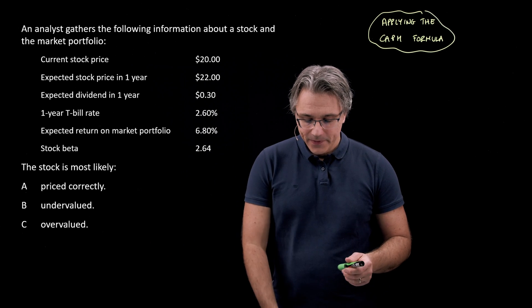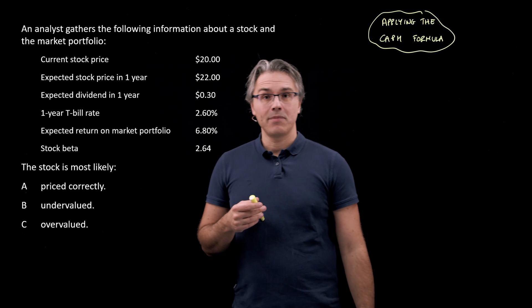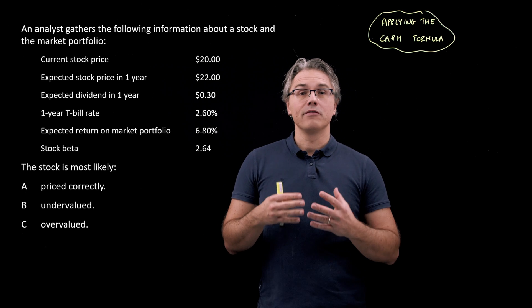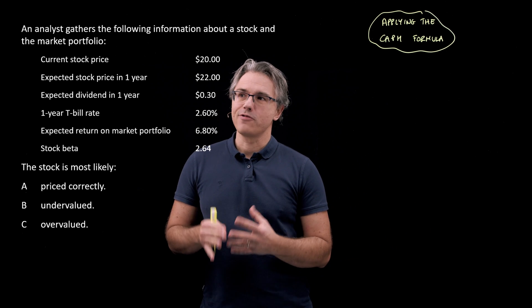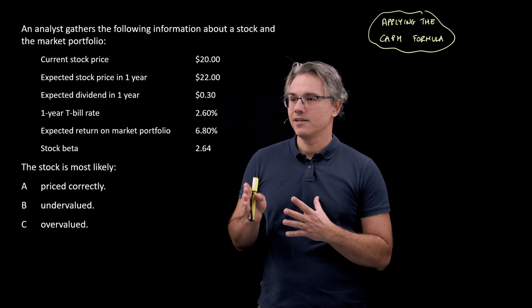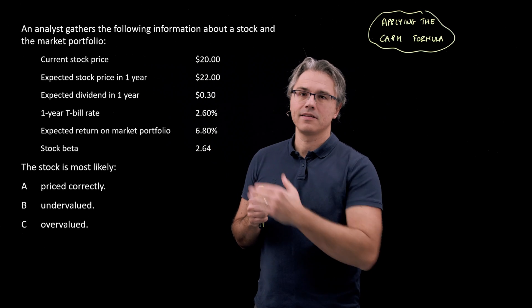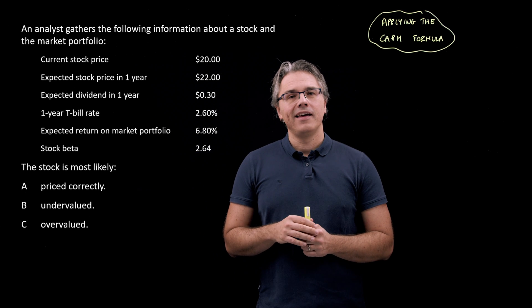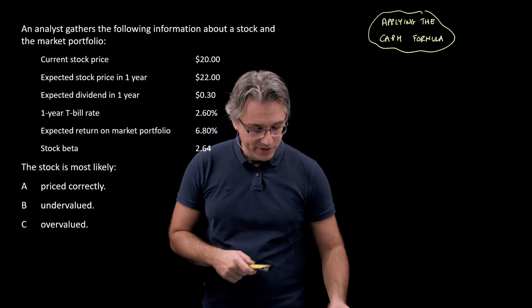Right, so this is where you get to use the capital asset pricing model to figure out the required return on a stock given its risk characteristics, especially given its beta, its exposure to the sensitivity to market risk factors. And you're supposed to compare that to the expected return.